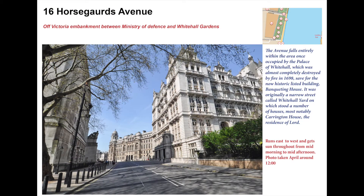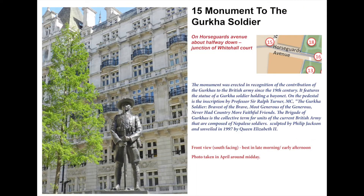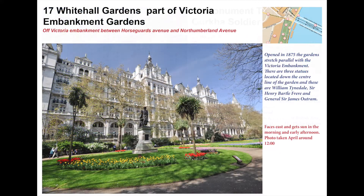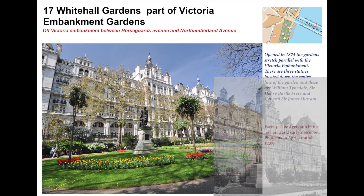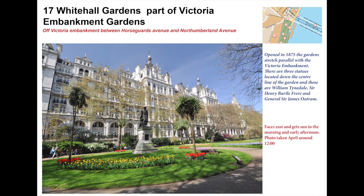Horse Guards Avenue links the Embankment to Horse Guards Parade, and halfway down there is a memorial to the Gurkhas, who have been an important part of the British Army since the 19th century. Whitehall Gardens was built as part of the Victorian Embankment in 1875, and the building in front contains the Liberal Club, Horse Guards Hotel, and the Farmers Union.